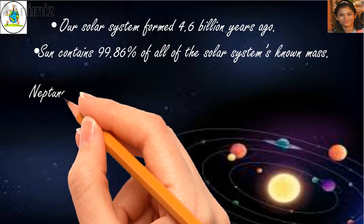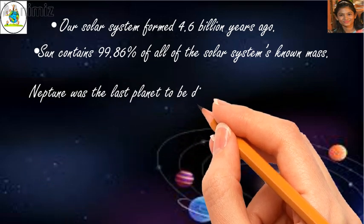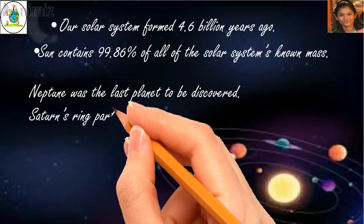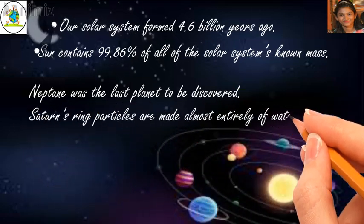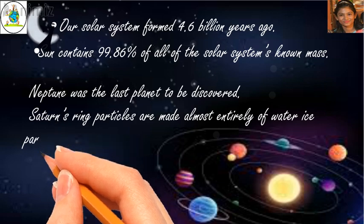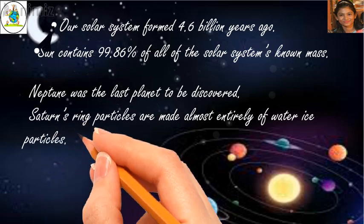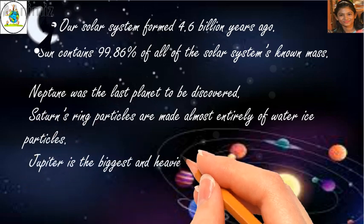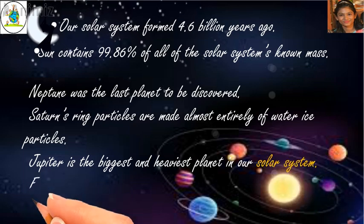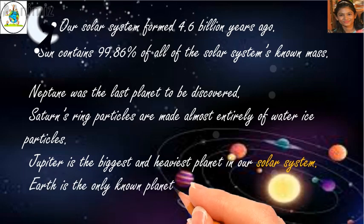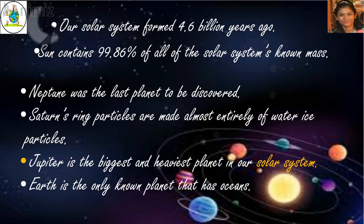Very heavy, right? Neptune was the last planet to be discovered. Saturn's ring particles are made almost entirely of water ice particles. Jupiter is the biggest and the heaviest planet in our solar system. Earth is the only planet known that has oceans.